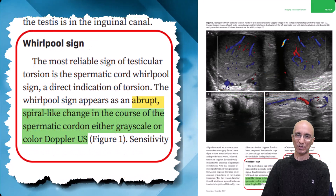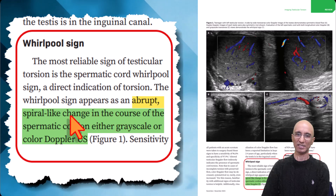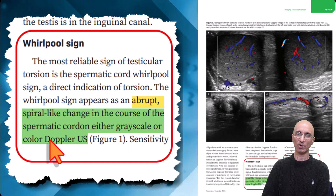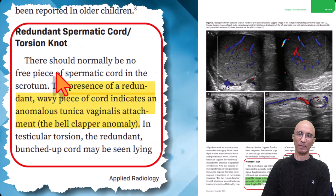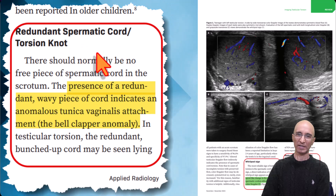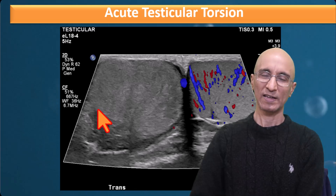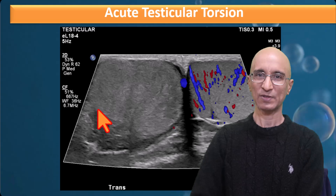As we saw in our patient, we can have what is called the whirlpool sign, where there is a spiral change in the course of the spermatic cord on either grayscale or color Doppler imaging. Also, in the setting of bell clapper deformity, there can be a redundant spermatic cord, called the torsion knot. I hope you found this case of acute testicular torsion interesting and informative. Thanks for your attention.